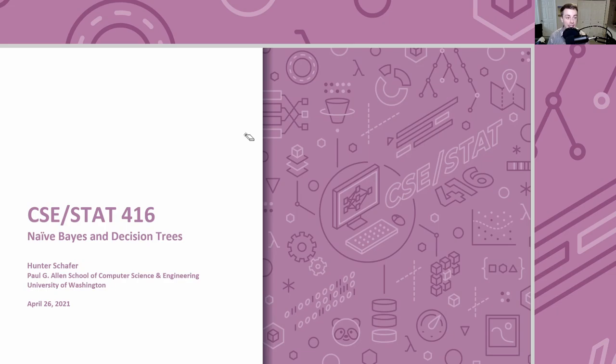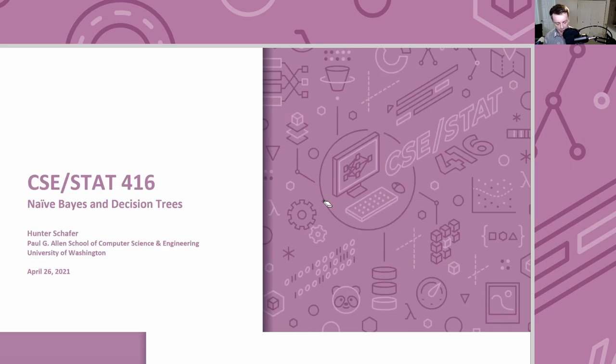Welcome back. This week we are continuing our discussion of classification. Today we'll be thinking about two very fundamentally different types of models for learning tasks. In this video I'm going to introduce the first model called Naive Bayes, and in class I'll talk about another type called decision trees. Both are very popular models in this classification space.